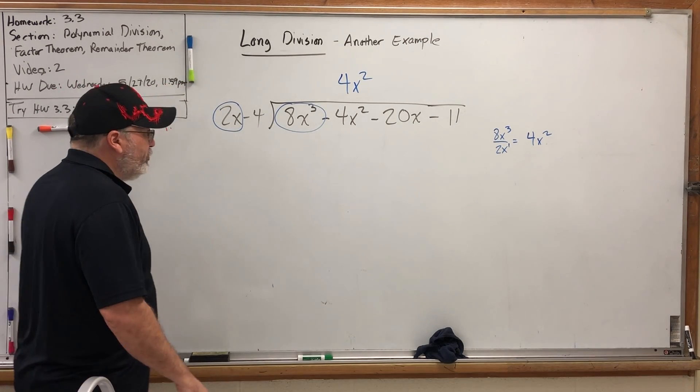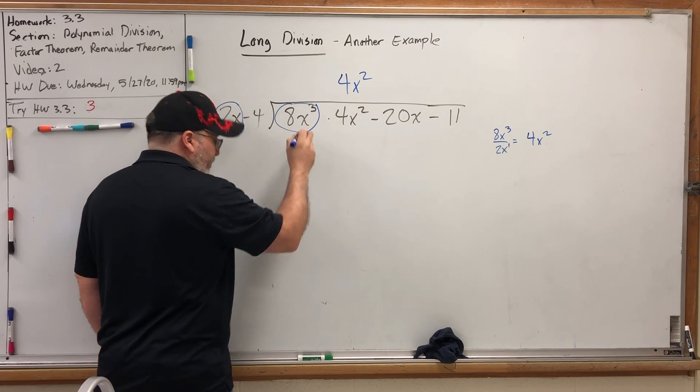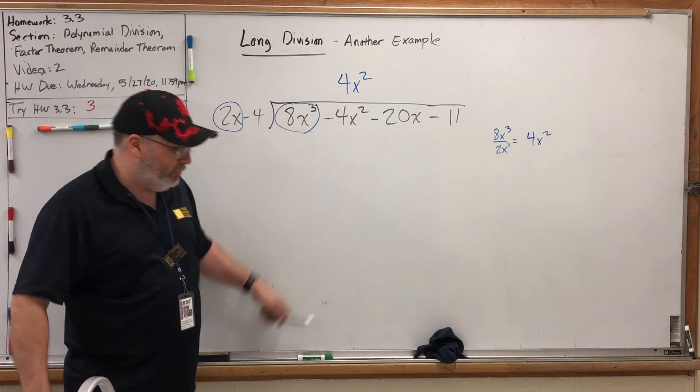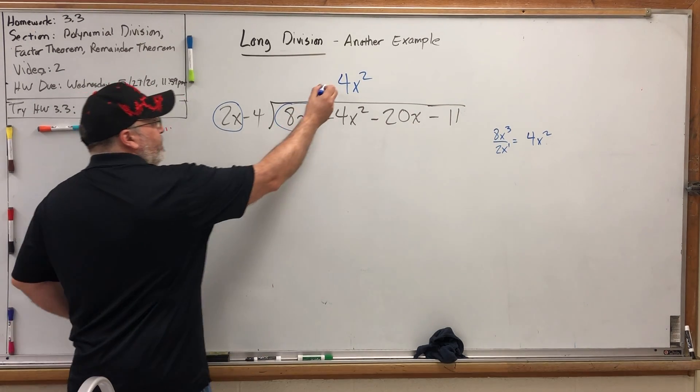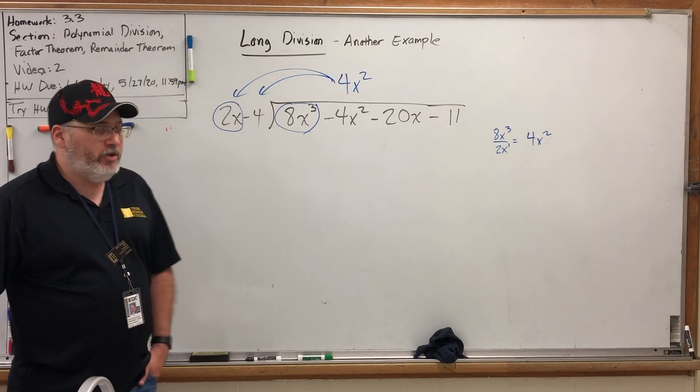And remember, if you're not sure what to do, ask yourself, what would I do next if this were just a number long division problem? The answer would be to multiply what I just wrote in the quotient times the divisor. Just remember, when you do the multiplying, you multiply it all.